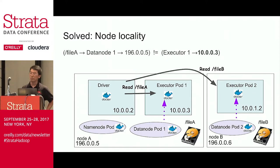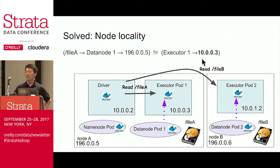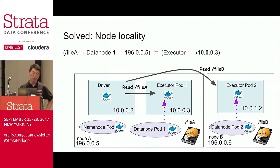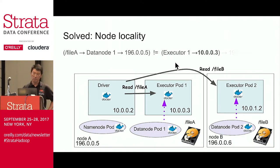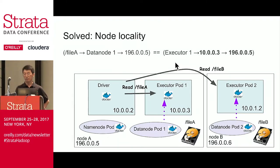The fix is pretty simple. Don't stop after getting the executor pod IP address — also ask the Kubernetes API server on which cluster node this pod is running. There's an API for that. Then Kubernetes will say that's node A, and you get a matching physical IP address. This is how we fixed the node locality.